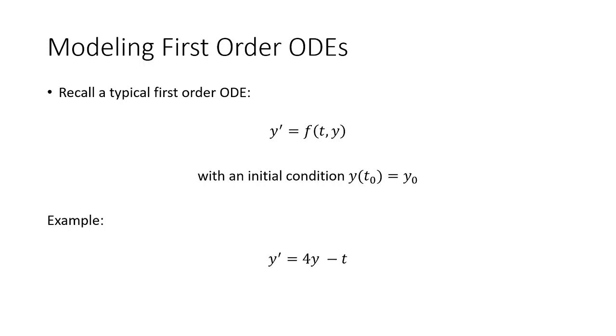As an example, you might have y' equals 4y minus t with an initial condition of y' equals 2. We're going to discuss this example a little bit further in just a minute.